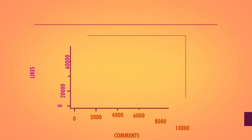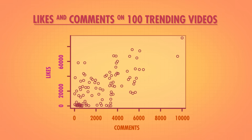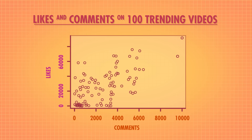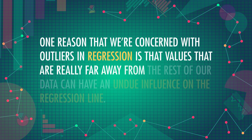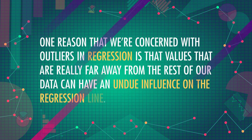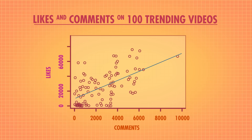Our model will look something like this. The first thing we want to do is plot our data from a hundred videos. This allows us to check whether we think the data is best fit by a straight line, and look for outliers — those are points that are really extreme compared to the rest of our data. These two points look pretty far away from our data, so we need to decide how to handle them. We covered outliers in a previous episode and the same rules apply here. We're trying to catch data that doesn't belong. Since we can't always tell when that happened, we set a criteria for what an outlier is and stick to it. One reason we're concerned with outliers in regression is that values really far away from the rest of our data can have an undue influence on the regression line. In this case, we're going to leave these points in.